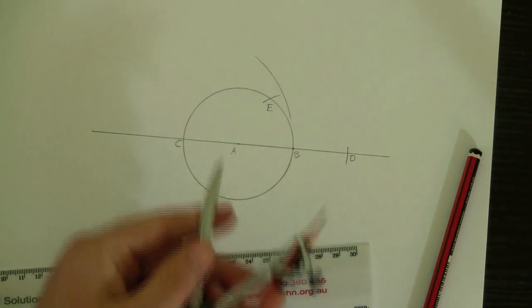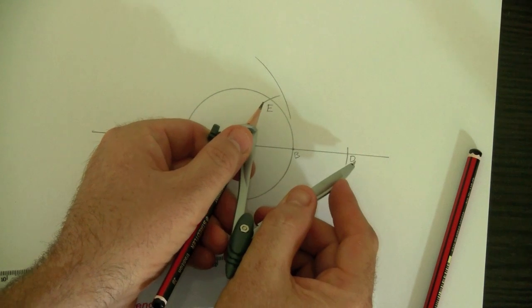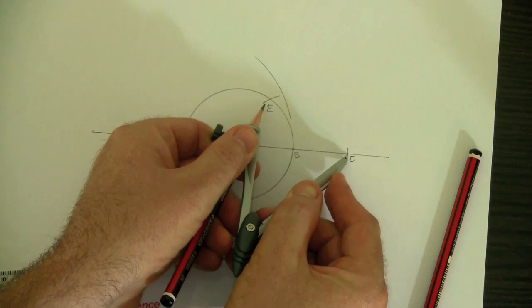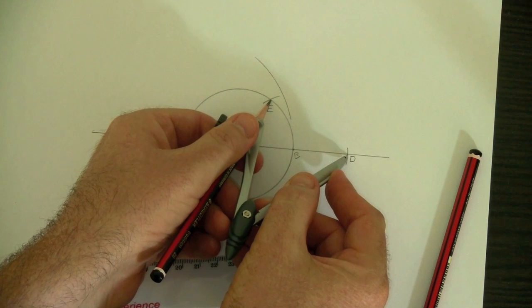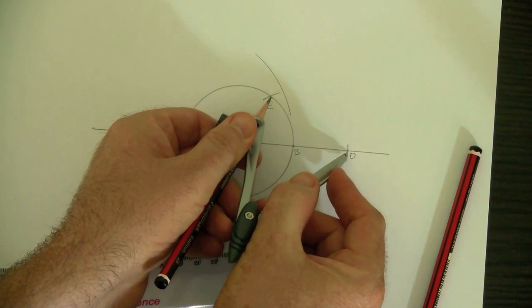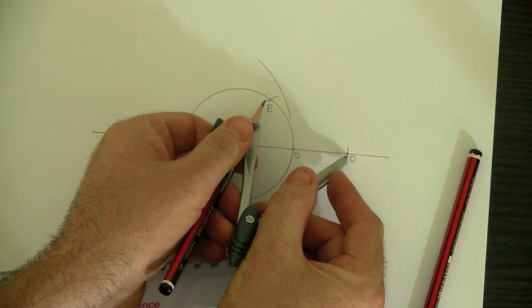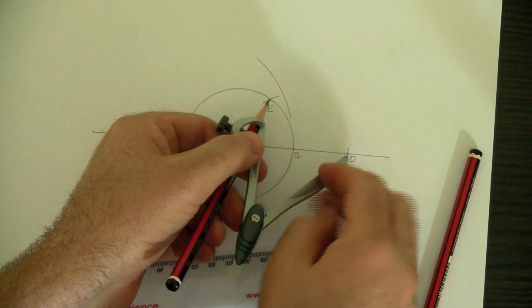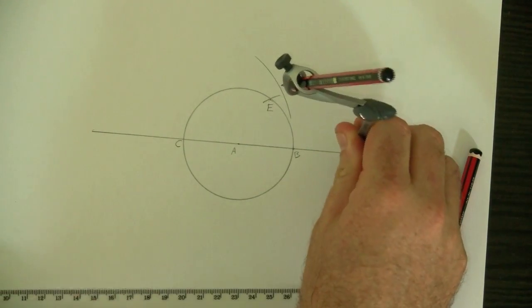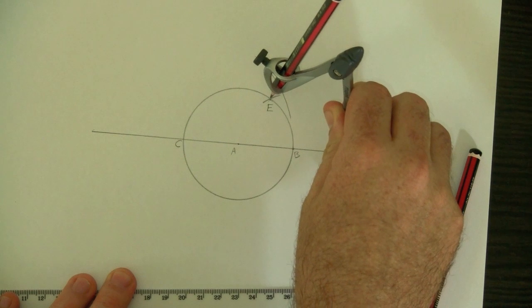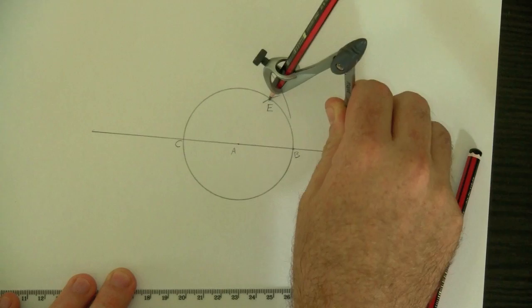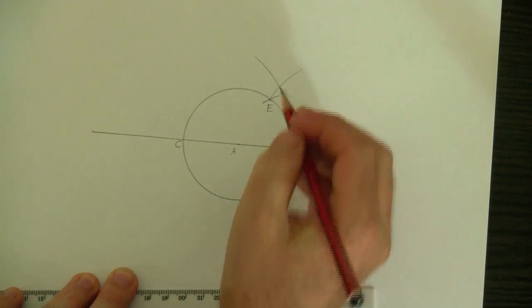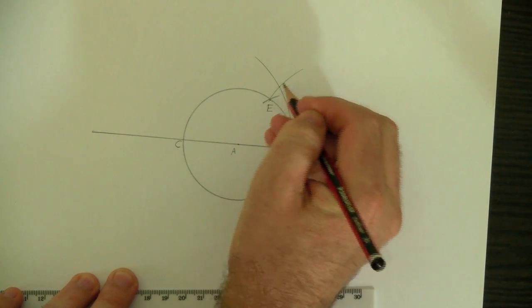Then, I'll set the compass to the distance between D and E. So there we have it. Almost. All right, that will do. And I'll find where this circle, where this radius meets here. So now these two big circles, they meet in a new point. We'll call that F.